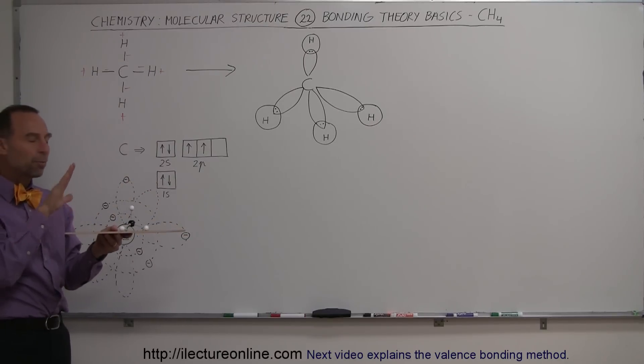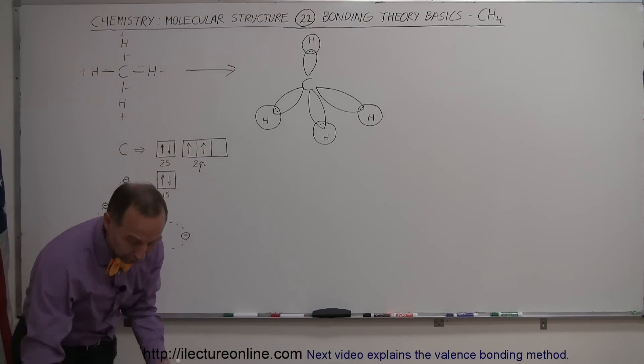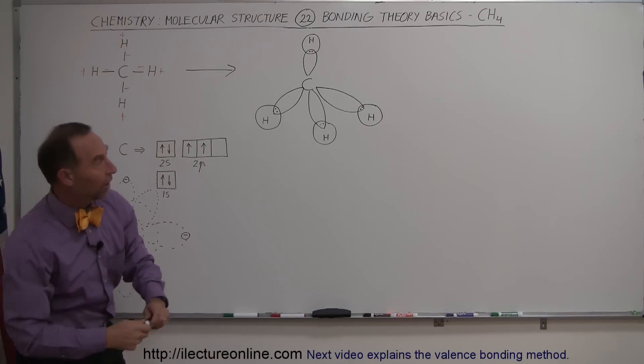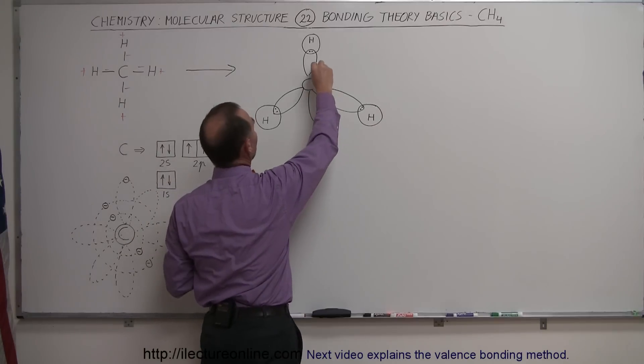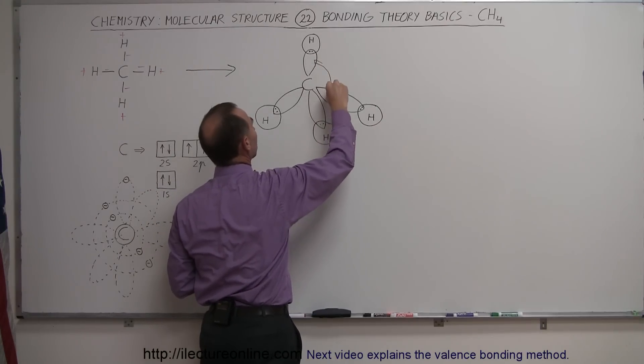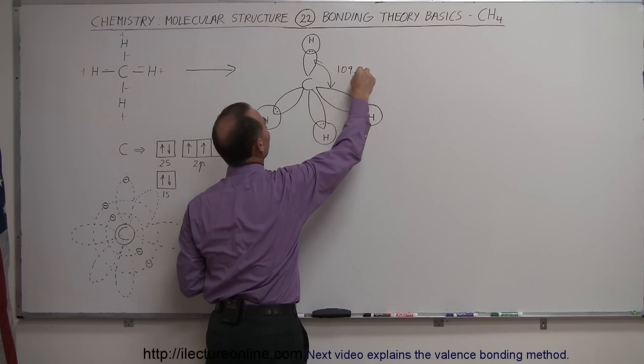So what we're seeing is that the repulsive forces between the electron bond pairs is very important in determining the physical structure of the molecule. What I try to do there is draw one of those molecules with the realization that the angle between any two of the electron bond pairs is 109.5 degrees.